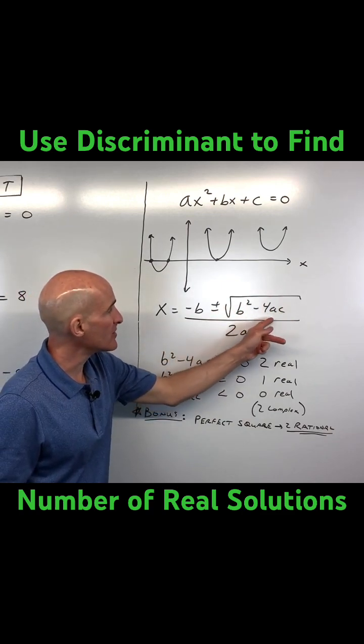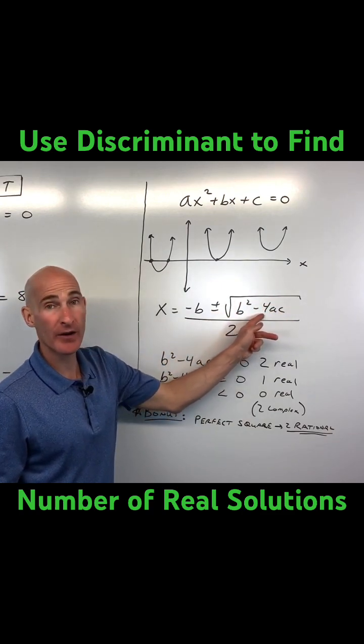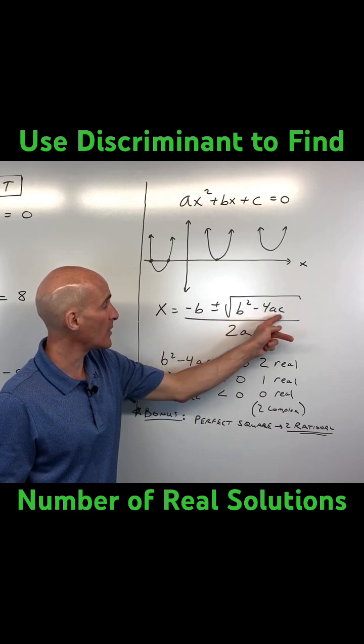The discriminant is the part underneath the square root in the quadratic formula. It's b² minus 4ac.